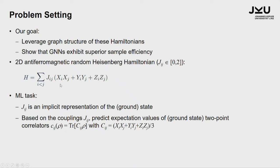Our problem Hamiltonian at hand was the 2D antiferromagnetic random Heisenberg Hamiltonian. Random means the coupling J_ij are randomly chosen between 0 and 2 — all positive, so antiferromagnetic. It's Heisenberg because it's really X, Y, and Z couplings. In principle this has couplings between all spins, but in the end we took nearest neighbors only. The ML task is: by observing that the J_ij are an implicit representation of the ground state — the J_ij makes up the Hamiltonian, the Hamiltonian determines the ground state — based on the couplings J_ij given to us as input to the graph neural net, we want to predict expectation values of the ground state two-point correlator.